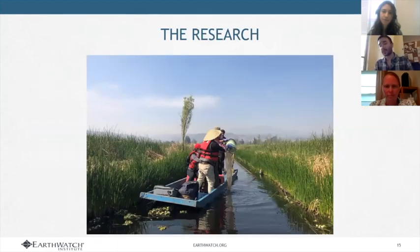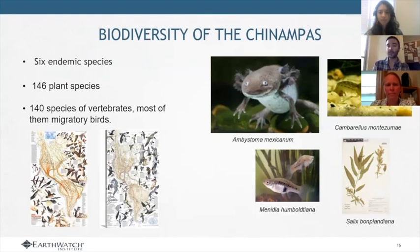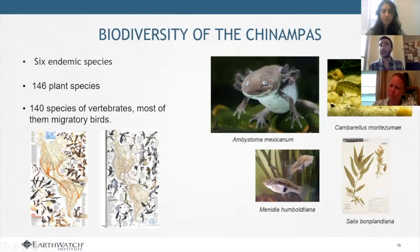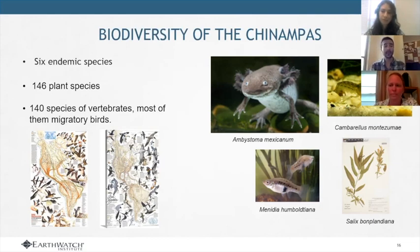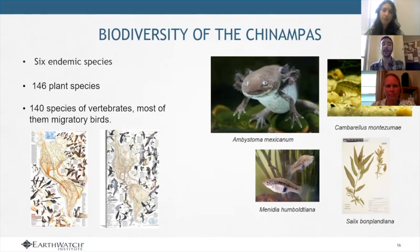The research we are conducting is very focused on maintaining Xochimilco and the diversity of the Chinampas. We believe the Chinampa agricultural production system historically allowed a lot of biodiversity — it was a very sustainable way of producing food. We have six endemic species, around 146 plant species including aquatic plants, and around 140 species of vertebrates. Most of them are migratory birds, because Mexico City is along many migratory routes.